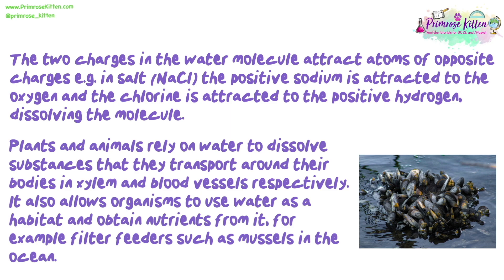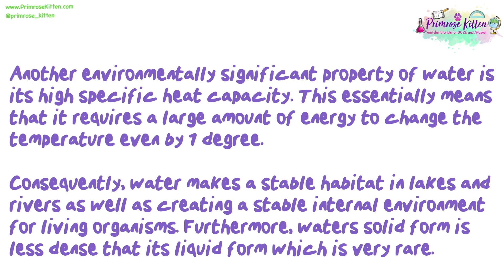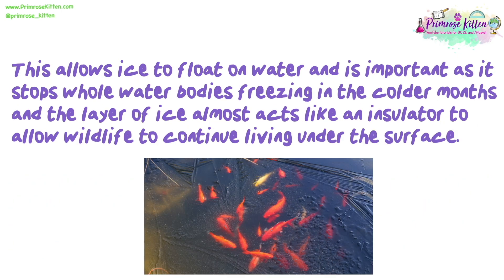Plants and animals rely on water to dissolve substances that they transport around their bodies in xylem and blood vessels respectively. It also allows organisms to use water as a habitat and obtain nutrients from it — for example, filter feeders such as mussels in the ocean. Another environmentally significant property of water is its high specific heat capacity, meaning it requires a large amount of energy to change the temperature, even by one degree. Consequently, water makes a stable habitat in lakes and rivers, as well as creating a stable internal environment for living organisms. Furthermore, water's solid form is less dense than its liquid form, which is very rare. This allows ice to float on water, which stops whole water bodies freezing in colder months, and the layer of ice acts like an insulator to allow wildlife to continue living under the surface.